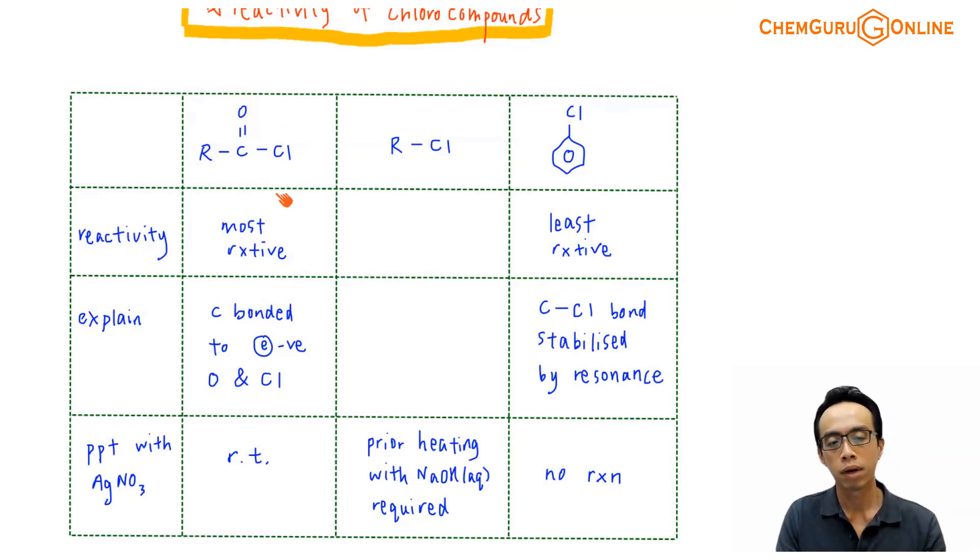The reason why my acid chloride is the most reactive, is because my carbon is attached to 2 electronegative species. My oxygen is electronegative, which is delta minus. My chlorine is also electronegative, which is delta minus charge. So my carbon is attached to 2 electronegative species, it makes this carbon very positively charged. Therefore, it becomes very attractive to nucleophiles, the reactivity will go up.